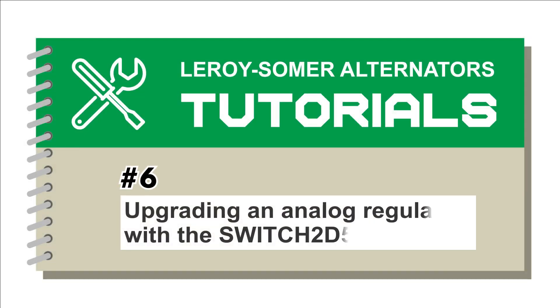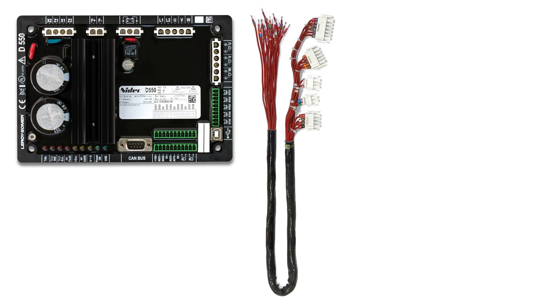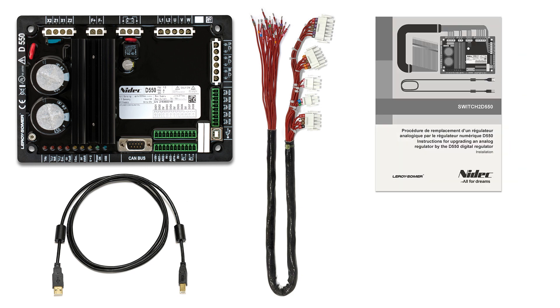Thanks to Switch to D550, it is very easy to replace an analog voltage regulator R449 with the digital D550 regulator. This stands whether the R449 is equipped or not with an optional module. Switch to D550 consists of a voltage regulator D550, a set of one meter long made end lock cable and USB cable, and one installation guide.